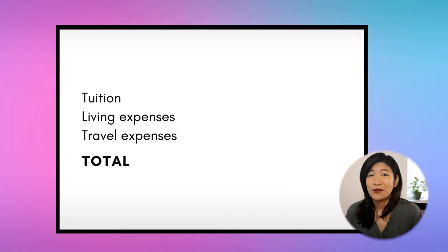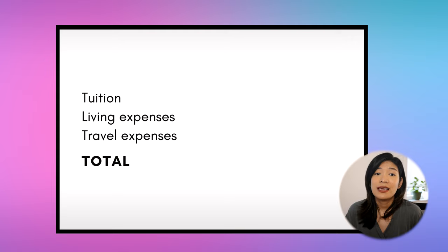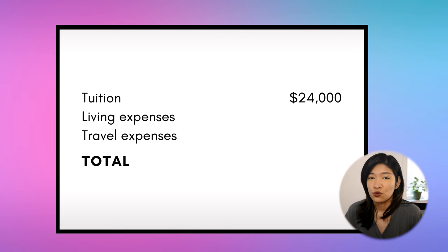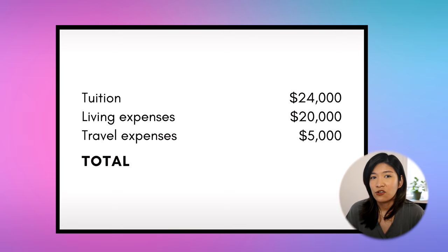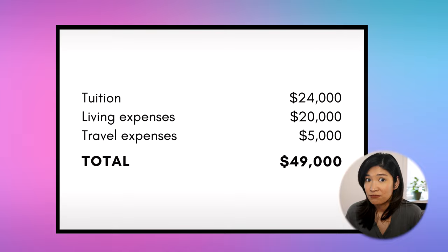Here's a basic breakdown for a single student with no family taking a two-year diploma program in a relatively affordable city in Canada: their total tuition, total living expenses, total travel expenses, and so the total cost of their education amounts to this much. Now, if you don't have something close to the required amount, you do have a couple of options.